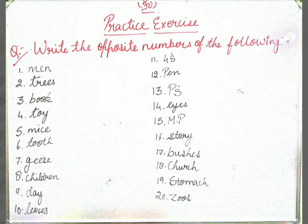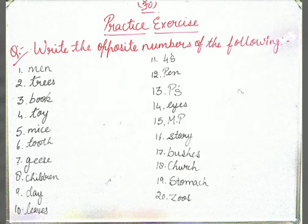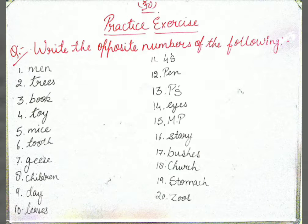This is the second question: write the opposite numbers of the following words. For example, if the word is singular, write its plural; if it is plural, write its singular. The words are: men, trees, book, toy, mice, tooth, geese, children, day, leaves, foes, pen, peas, eyes, MP, story, bushes, church, stomach, and zoos.